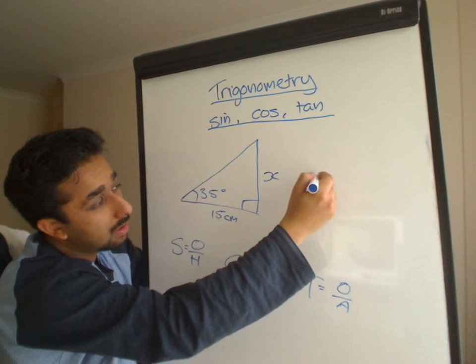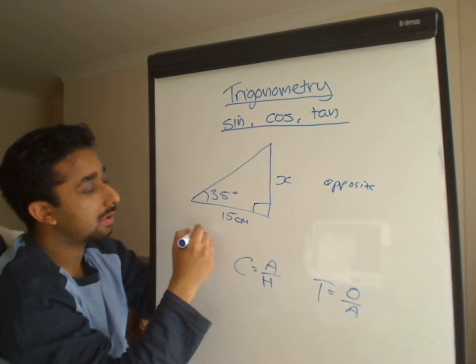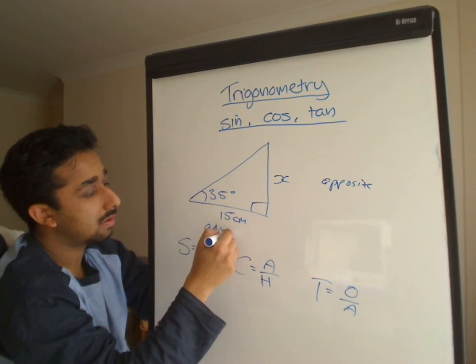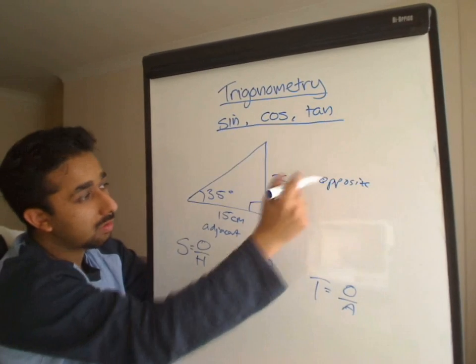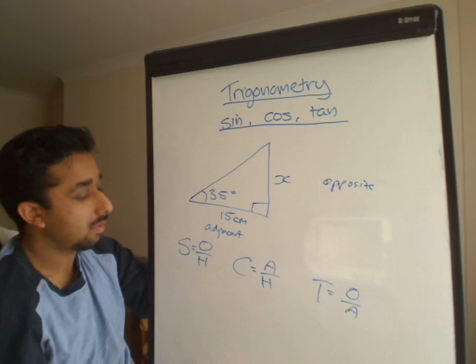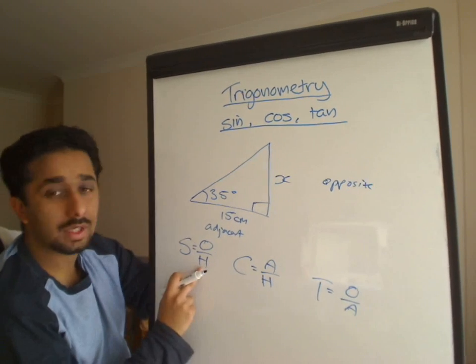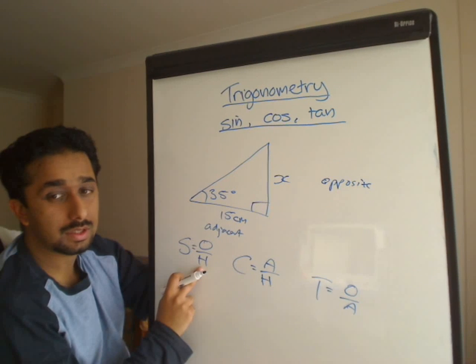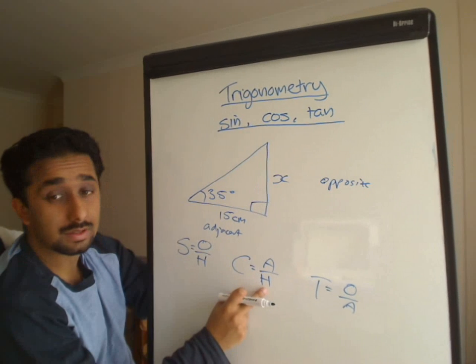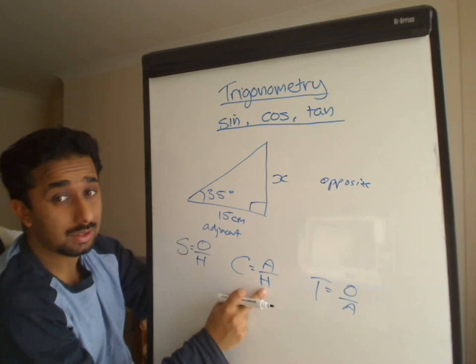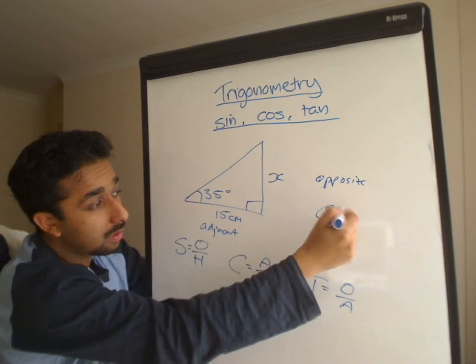Over here I've got the opposite and I've got the adjacent. Where I've got O and A. Which of these have an O and A in it? Has that got O and A? No, it's just got O and H. It's got the O bit. Has this got it? It's got the A bit, but not the O bit.